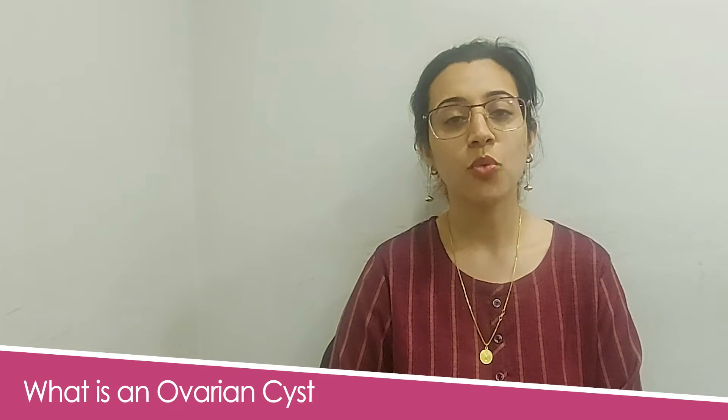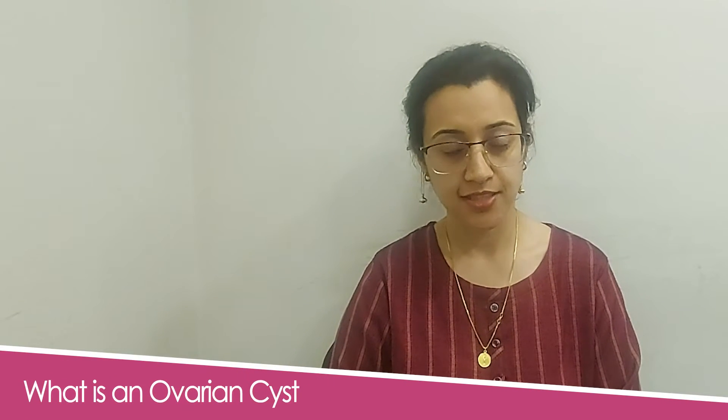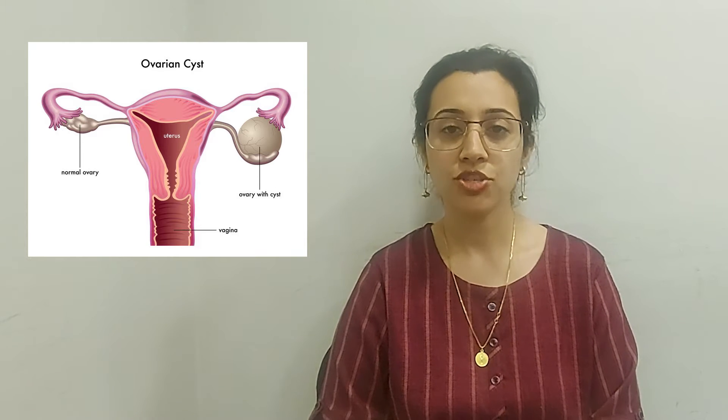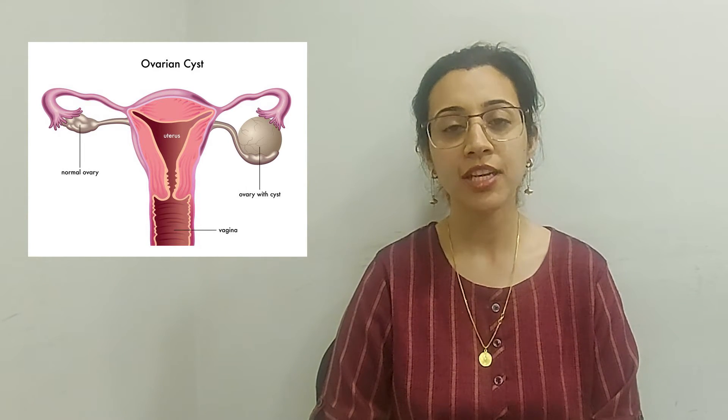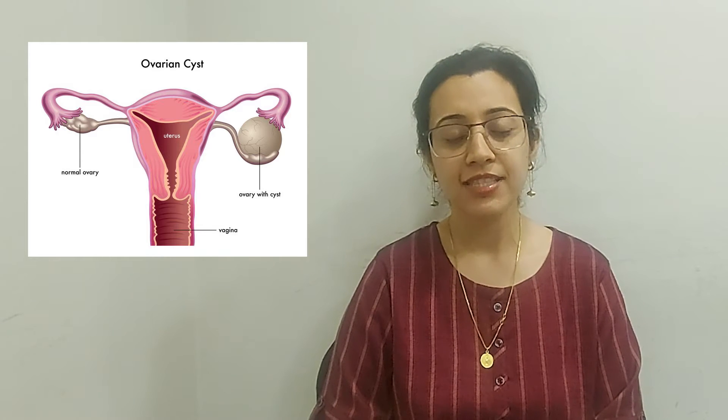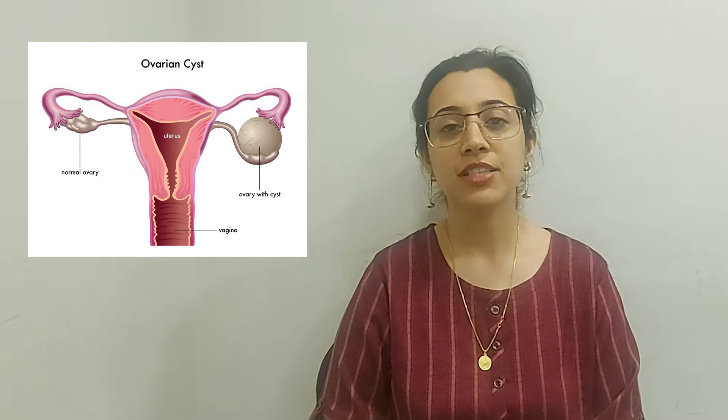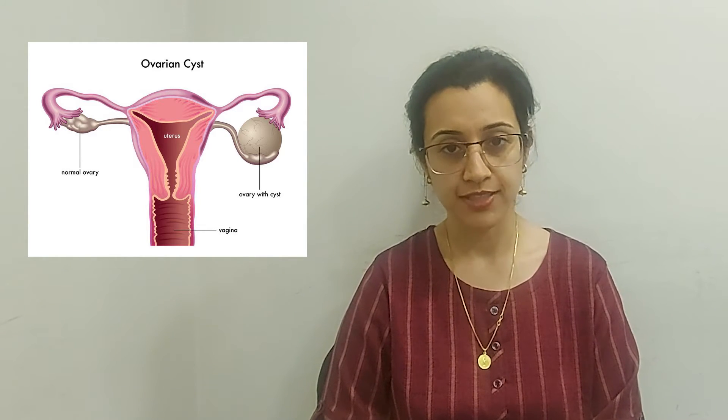Let me start off by talking about what an ovarian cyst is first. An ovarian cyst is basically a small collection of fluid inside the ovary. When we look at an ultrasound, these cysts will appear like tiny bubbles inside your ovaries. Cysts can be because of a variety of reasons and I'm going to be talking about the cysts that are mostly seen in women who will likely be undergoing IVF, so women in their reproductive age group.